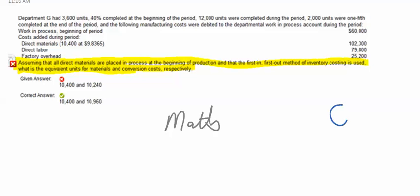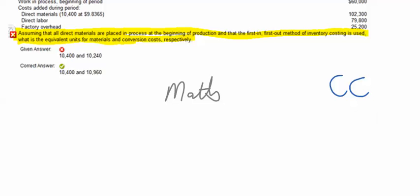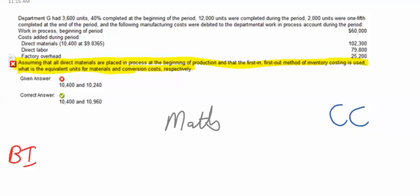When I set this kind of a problem up, I'm going to enter certain information first, the beginning inventory, and it said that we had 3,600 units in my beginning inventory at 40%.